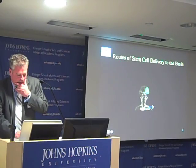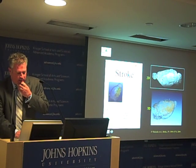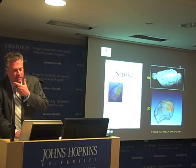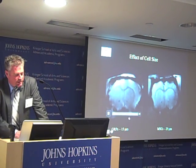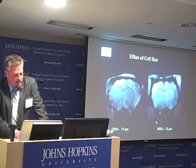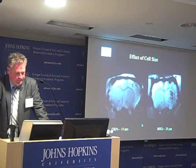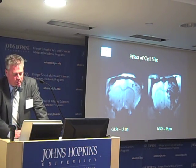Intra-arterial delivery is done clinically in stroke. You can see how in one hemisphere the cells lodge there. The safety of these studies depends on cell size. With small cells — glial-restricted precursor cells — we see them entering the brain and flowing through. But with larger cells such as mesenchymal stem cells, we can see how they localize in certain vessels and stay there for a prolonged time. We have to do this very carefully because we can cause microemboli.